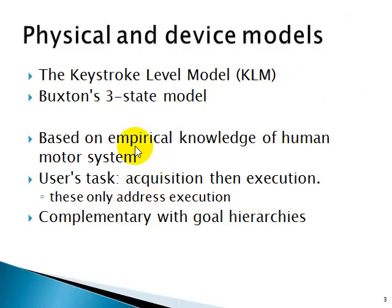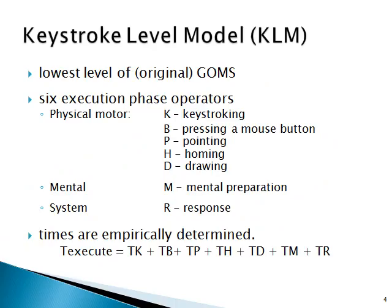In KLM we use empirical knowledge of the human motor system. There are certain statistical data which tell you how much time is required to click on a particular button, or how much time it takes to make mental preparation for a task — covering both acquisition and execution. In KLM we focus on how the execution, or the physical motor performance of the human, is carried out, and this is subdivided into the following operators.